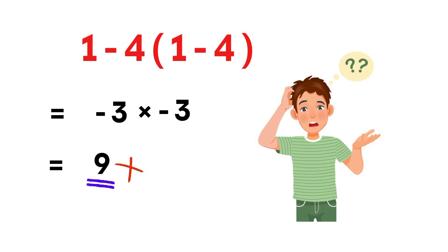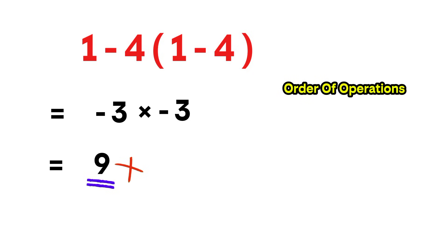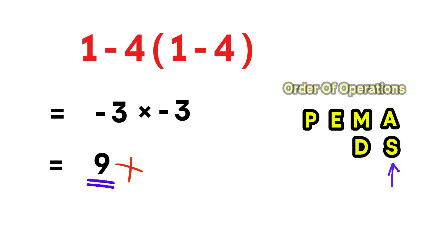Why? Let's slow down a bit. According to the order of operations, we always handle parentheses first, then exponents, then multiplication or division from left to right, and finally addition or subtraction from left to right.